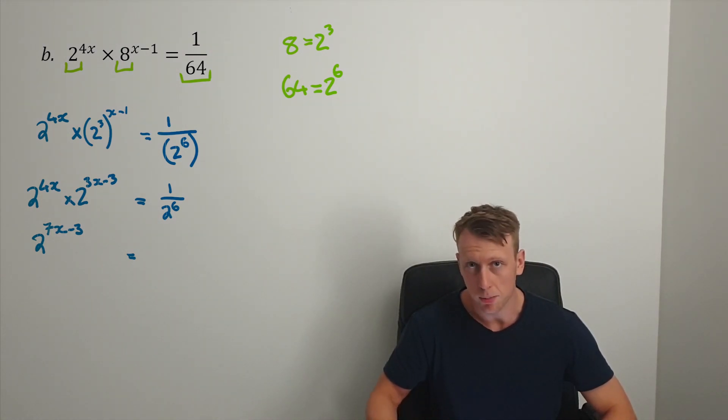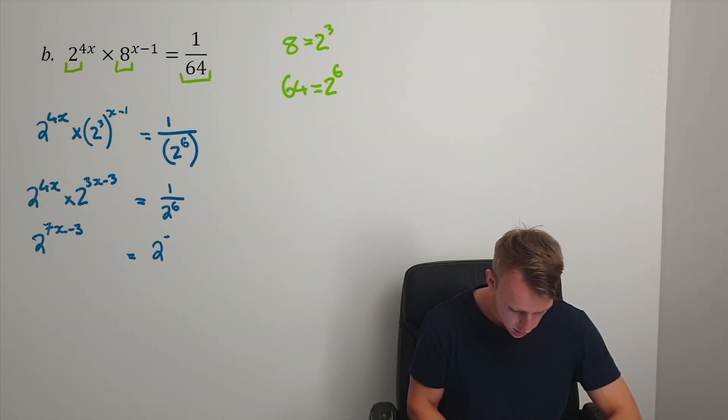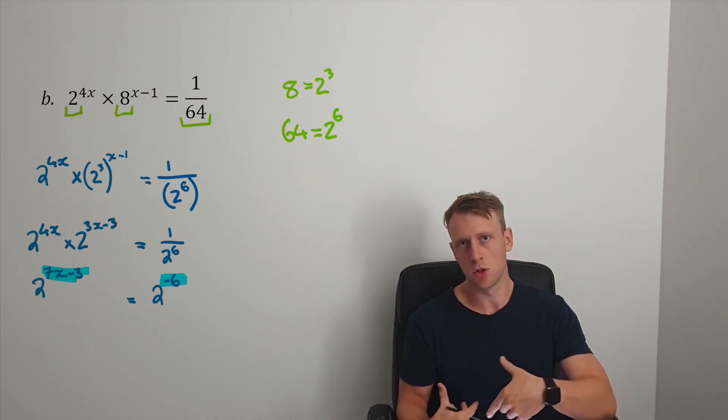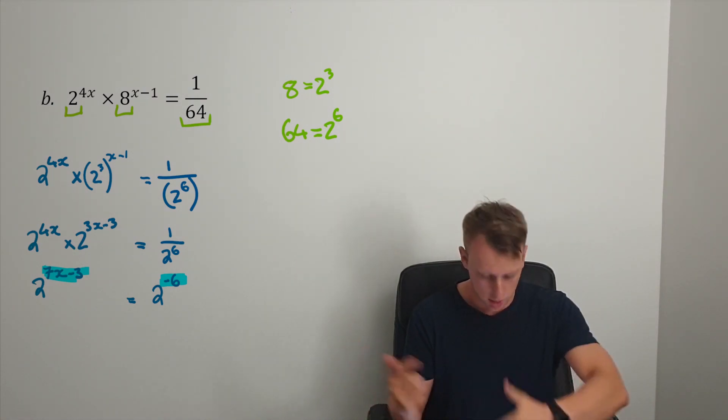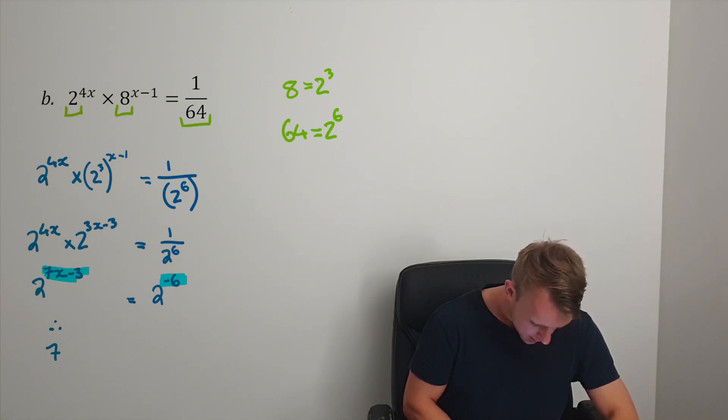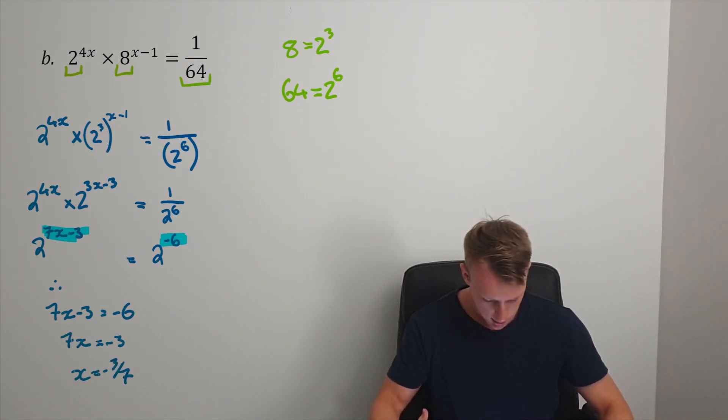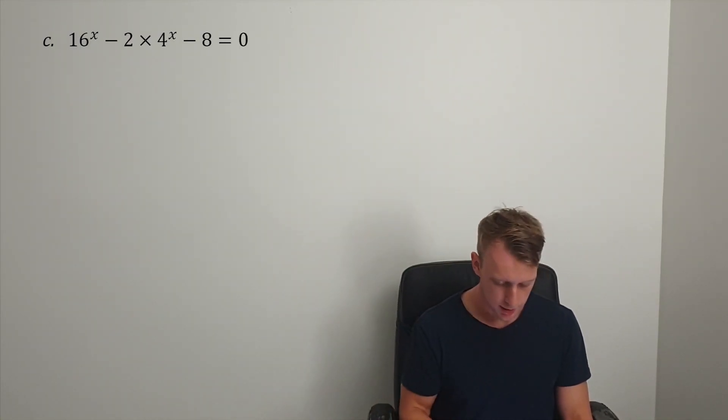We can draw the same conclusion where this power has to be equal to that power, because 2 to the power of that is equal to 2 to the power of that. Therefore, 7x-3 equals -6, so 7x equals -3, and x equals -3/7.